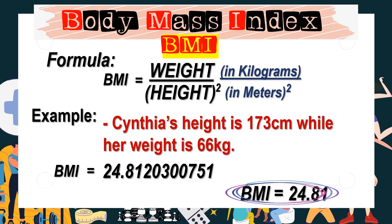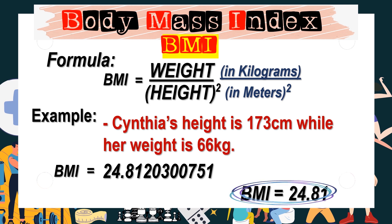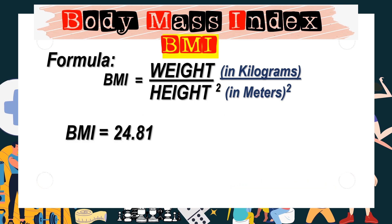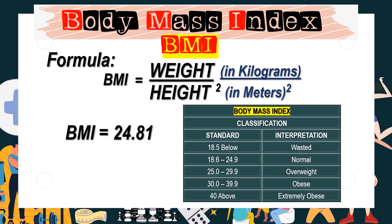The BMI of Cintia is 24.81. Now let's find the classification. Since her BMI is 24.81, it falls between 18.6 and 24.9, so the interpretation is normal. This means she needs to maintain her healthy figure.